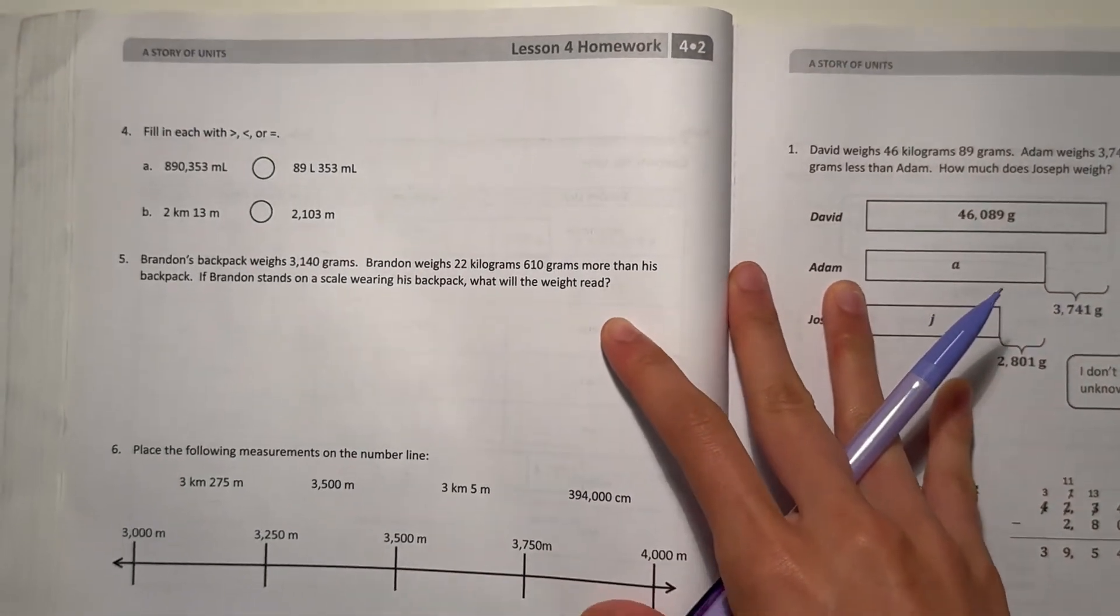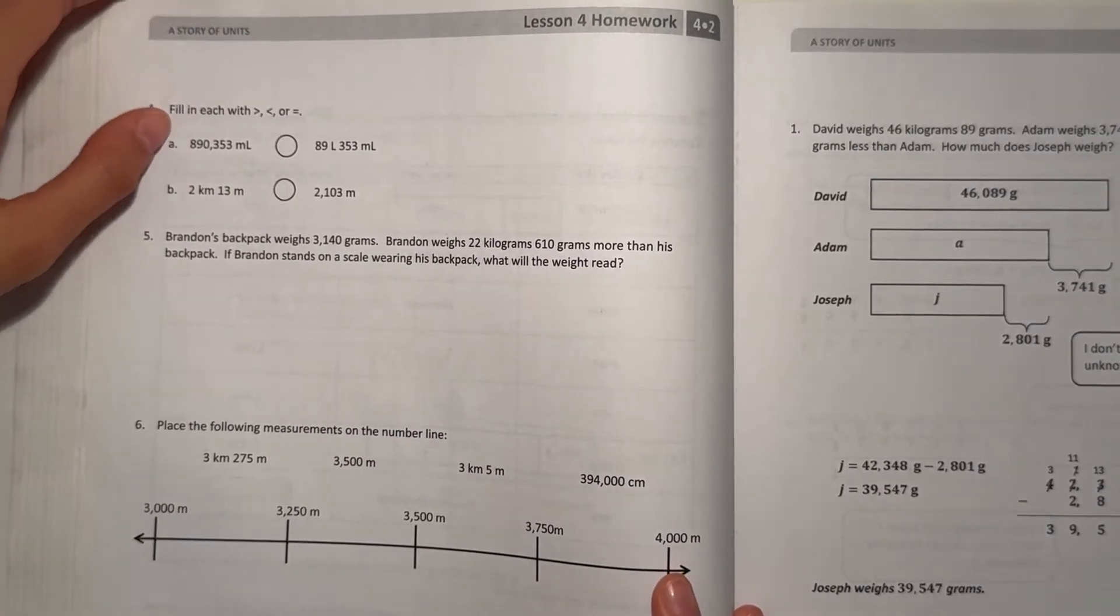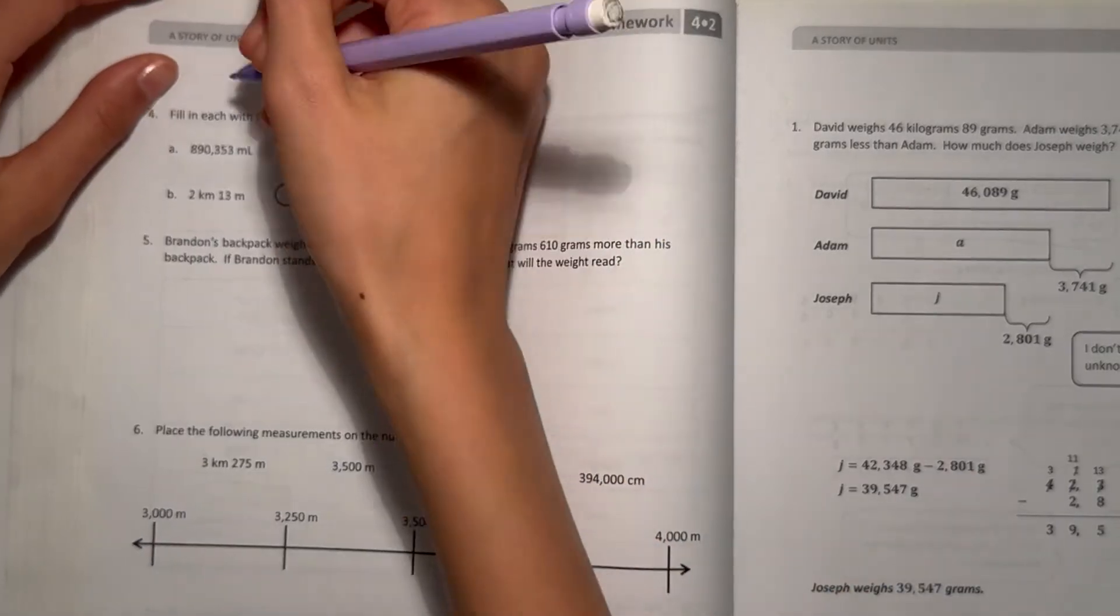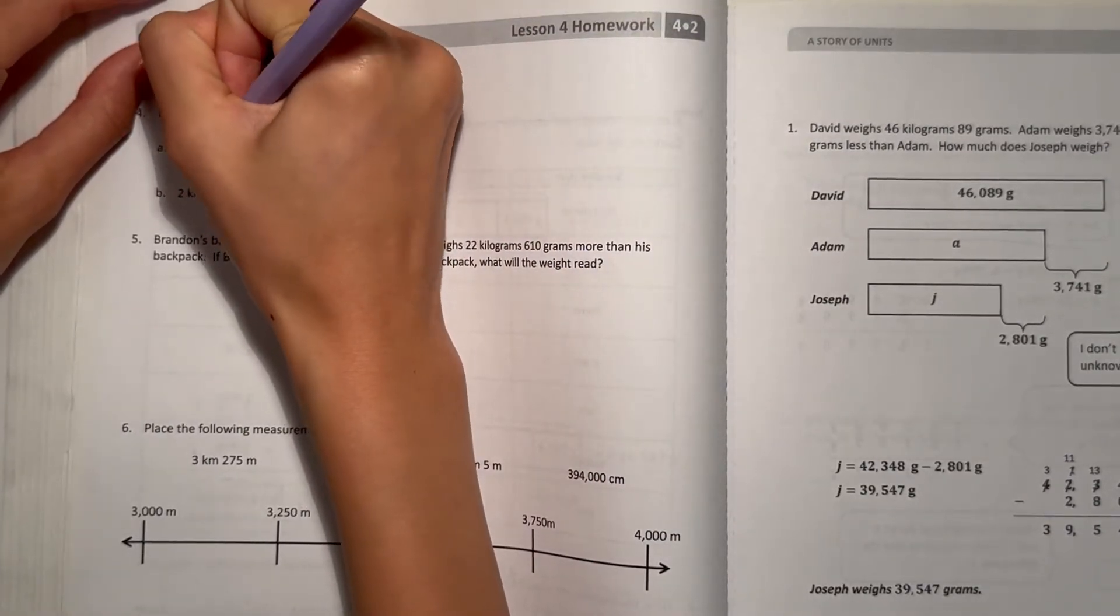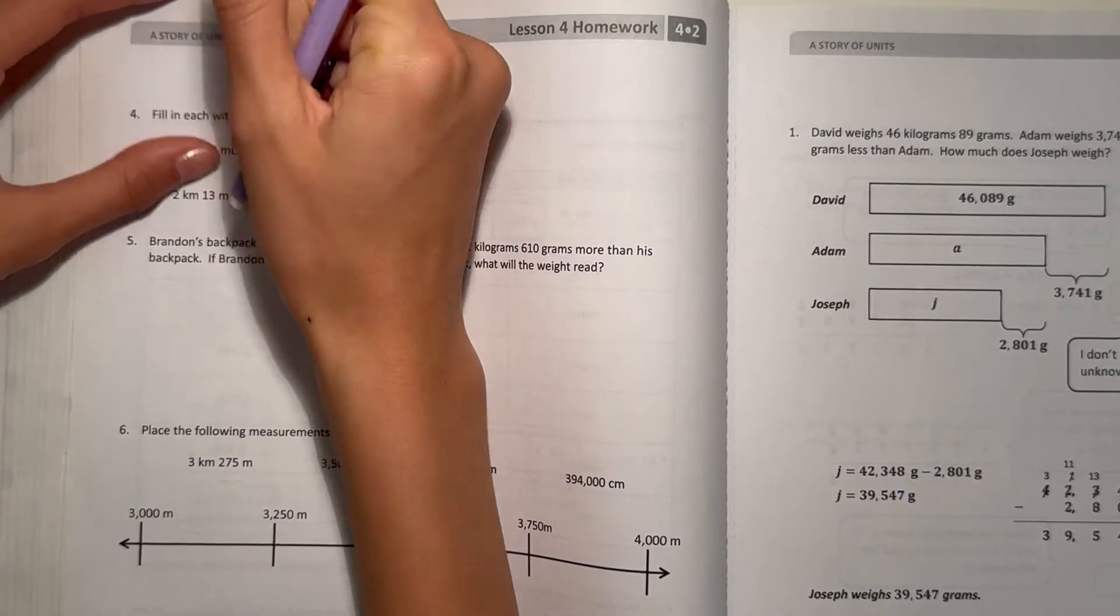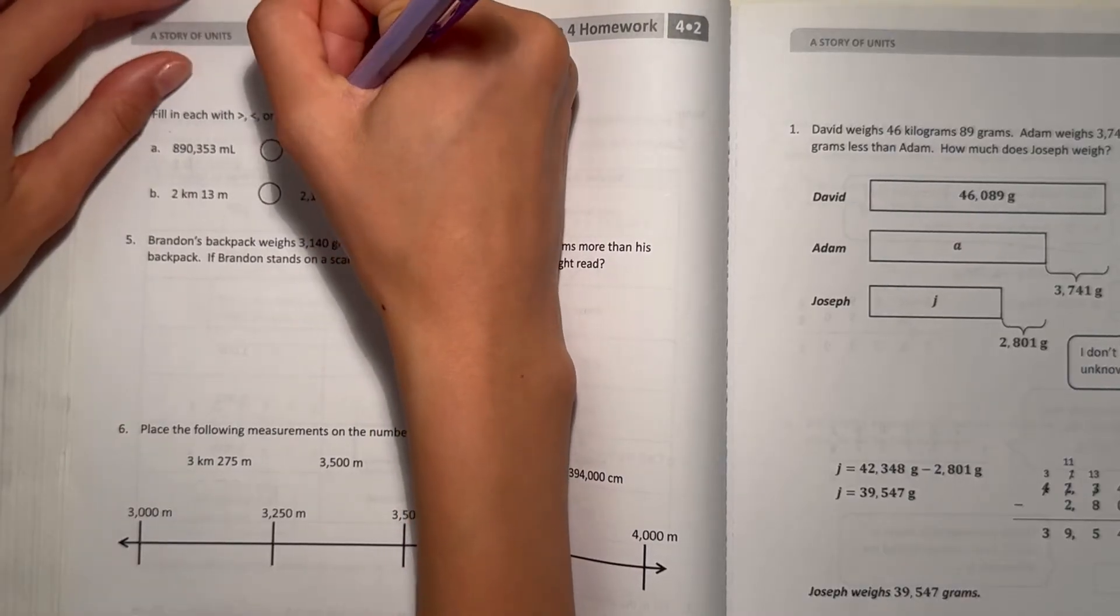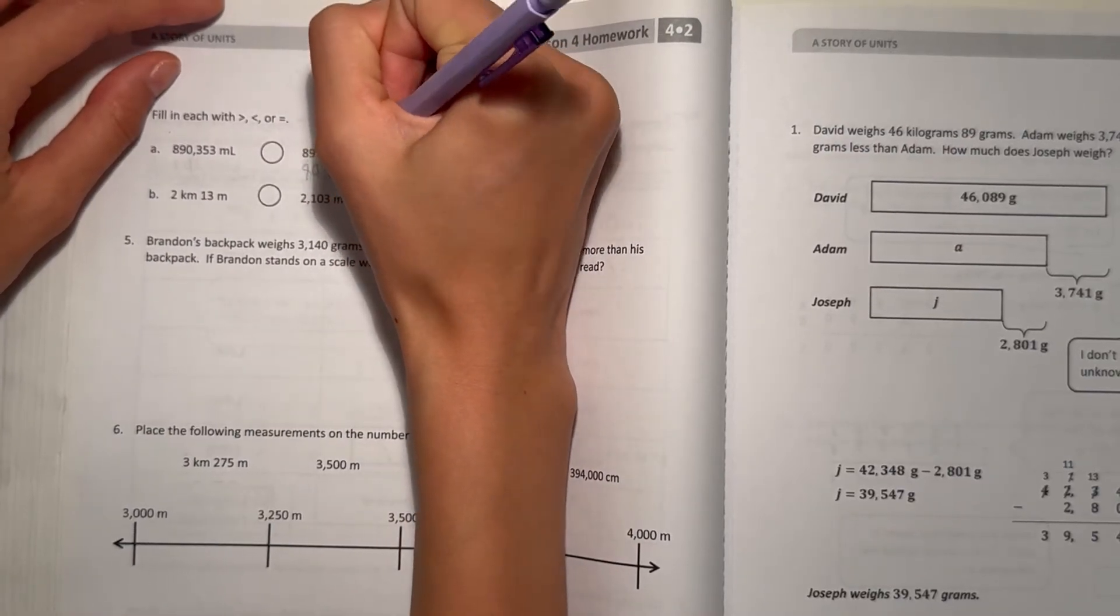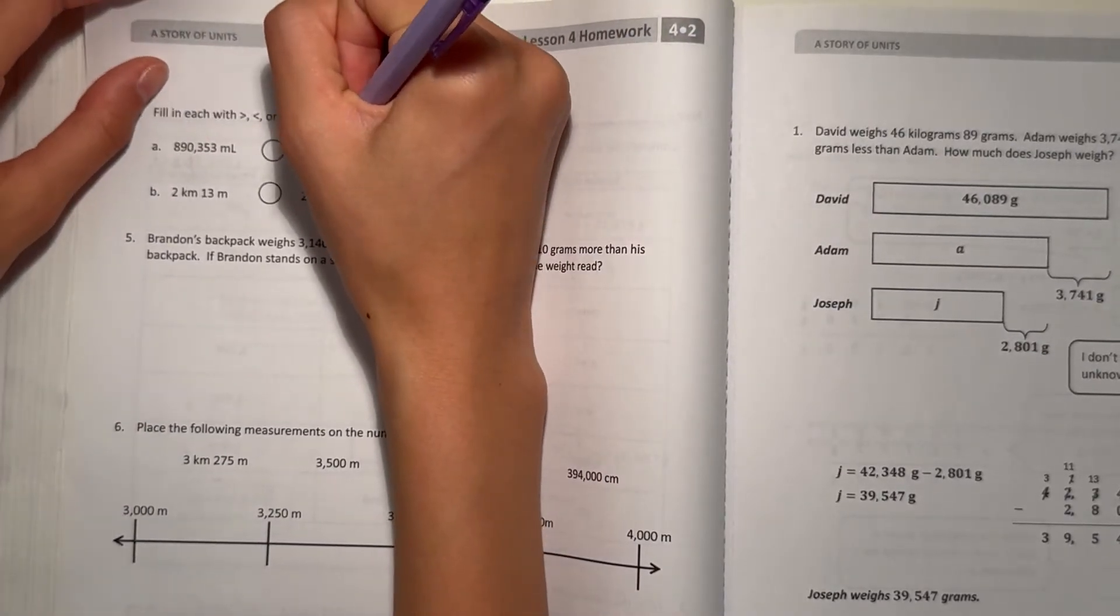Alright, next page. Fill in each with greater than or equal to 890,353 milliliters. So we can transform this into the mixed form. Actually, let's do this one into milliliters. So times 1,000, that's 89,353 milliliters. So 89,000 and 890,000, they're two different place values. So this is less, so that's greater.